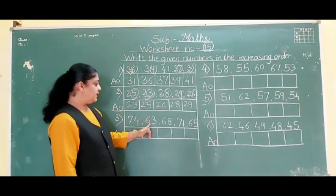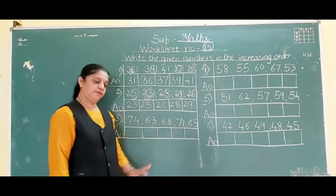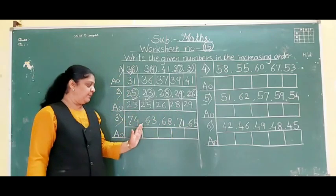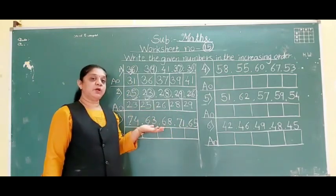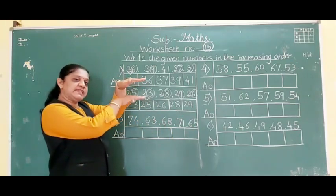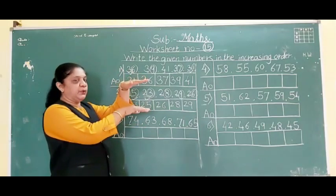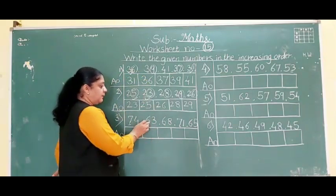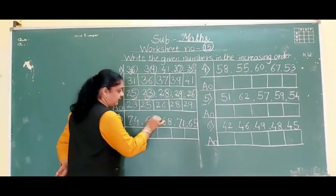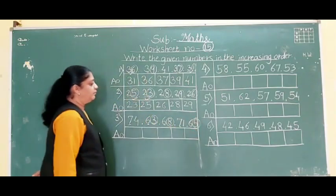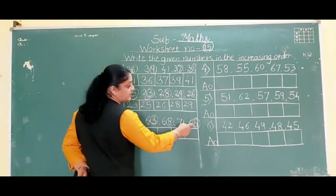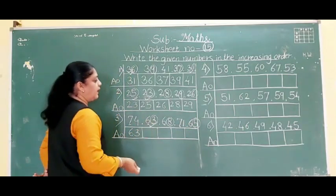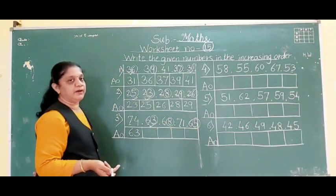Third example: 74, 63, 68, 71, 65. First digits are 7, 6, 6, 7, 6. We have 6 and 7. Which number is small? 6 is above and 7 is below. Above means small, so 6 is the small number. Now look at the second digits for the 6-group: 3, 8 and 5. Which is smallest? 63 is the smallest, then 65, then 68.